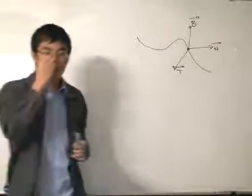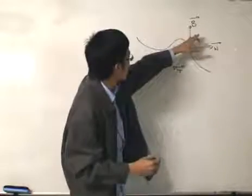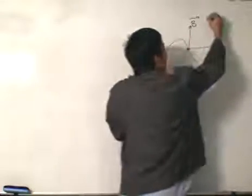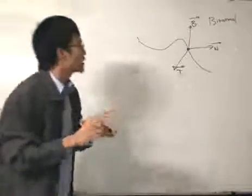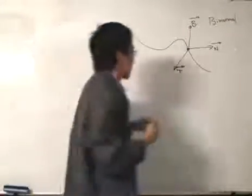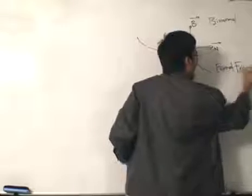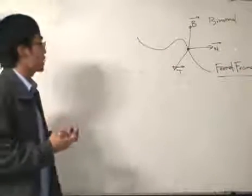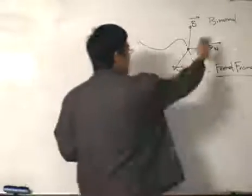Much like the IJK components, the unit tangent, the unit normal, and the unit binormal — spelled B-I-N-O-R-M-A-L, not to be confused with the binomial theorem — also form a frame together. This frame is called the Frenet frame — quite an elegant and catchy name.